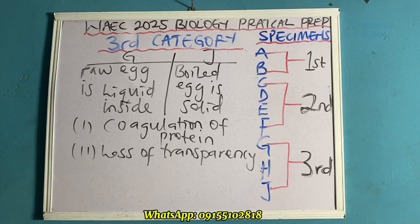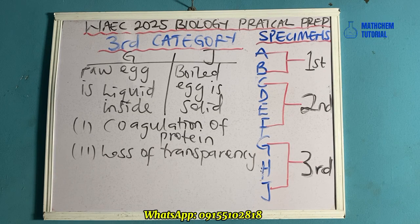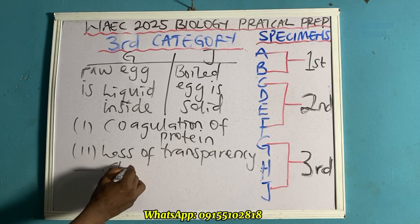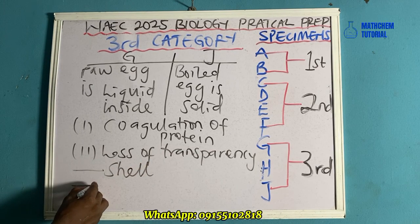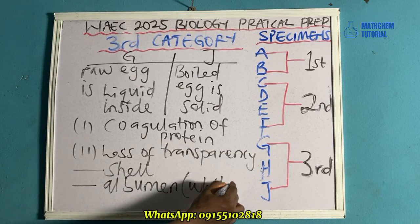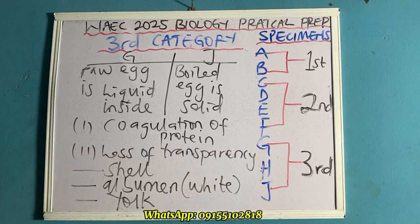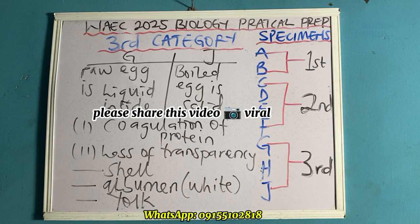Another question from this third category is that you should name the parts of the egg visible in specimen J. The first is the shell. The second is the albumen — A-L-B-U-M-E-N — also known as the white. The third is the yolk.